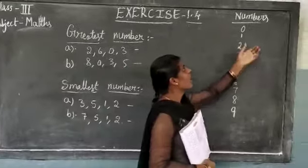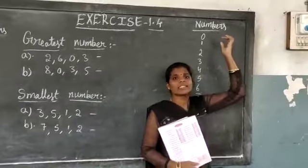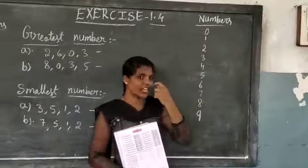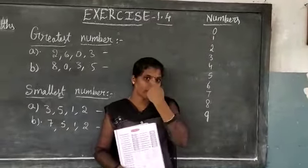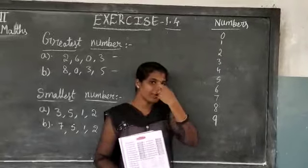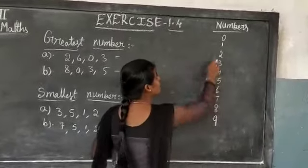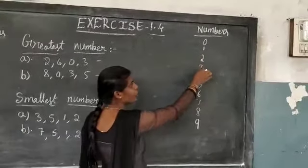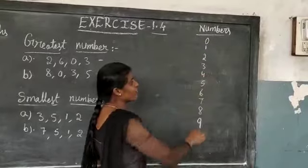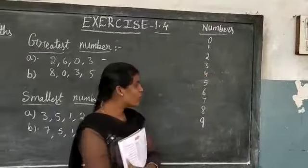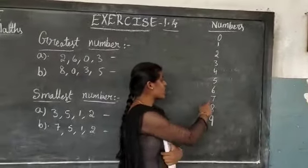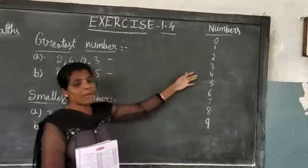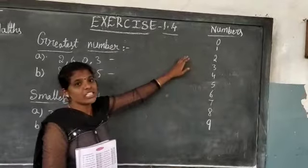First, number starts with 0, no children. Number starts with 0, then 0, 1, 2, 3, 4, 5, 6, 7, 8, 9. This is the number line, children.